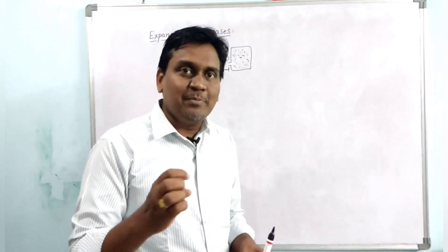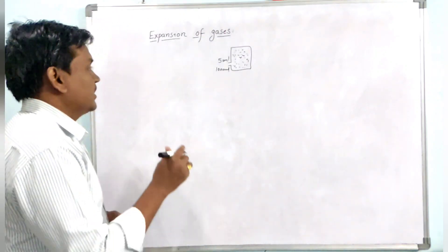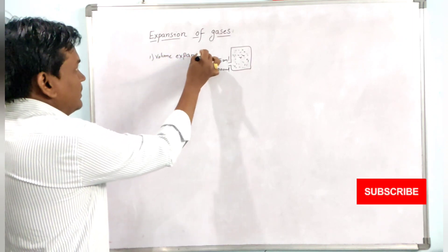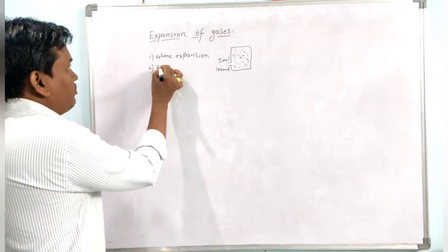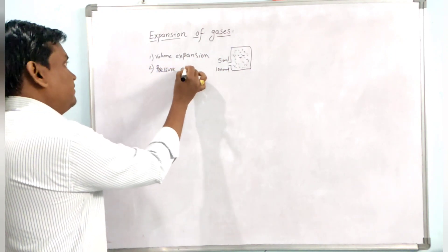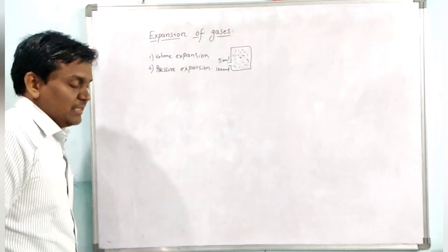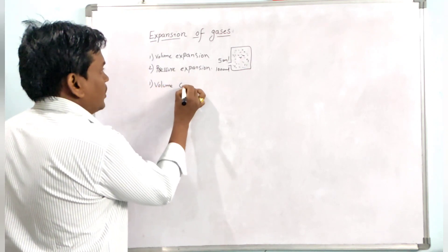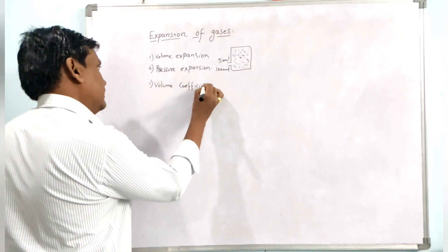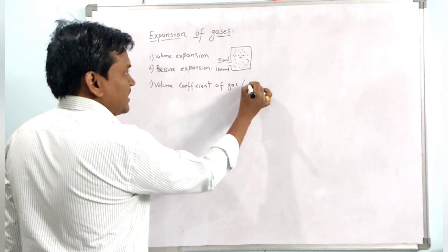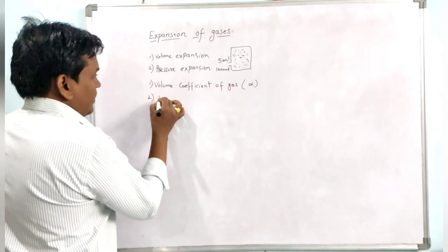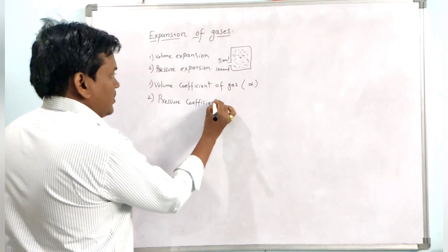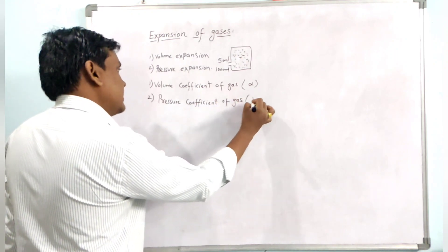Expansion of gas leads to two types: volume expansion and pressure expansion. So gases may expand in these two ways, giving us two definitions — the volume coefficient of gas, indicated with alpha (α), and the pressure coefficient of gas, indicated with beta (β).